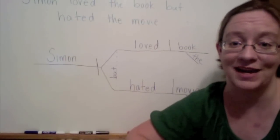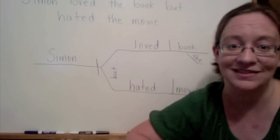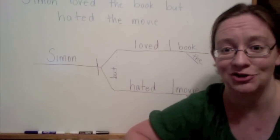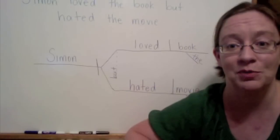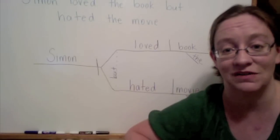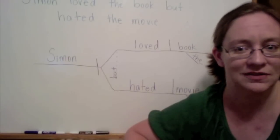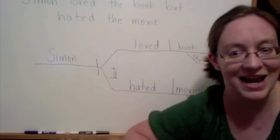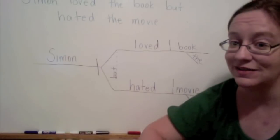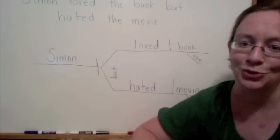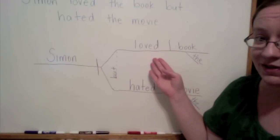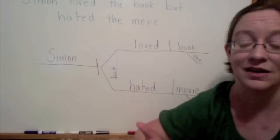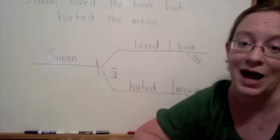Let's look at an example of a sentence with a compound predicate. In this sentence, 'Simon loved the book but hated the movie,' we need to ask ourselves who or what performed the action. There are two actions in the sentence, and they're both being performed by Simon. So Simon is the subject. The simple predicates of the sentence are always verbs. The two verbs in our sentence are 'loved' and 'hated.' On the sentence diagram, we can see that those two predicates are being shared by the same subject. Since the compound predicate shares the same subject, we know that it is a compound predicate.